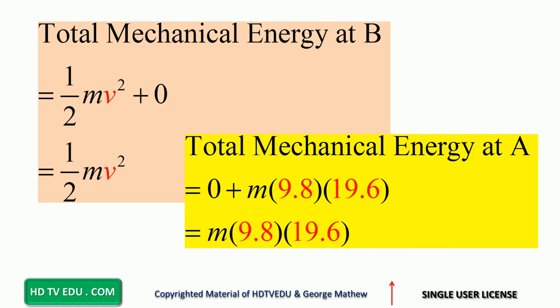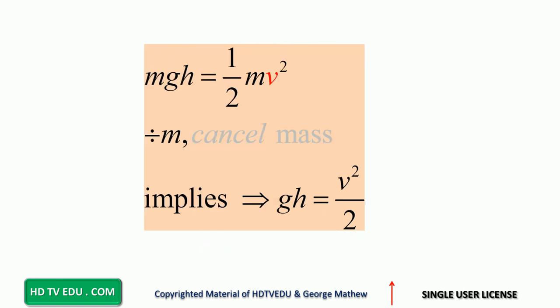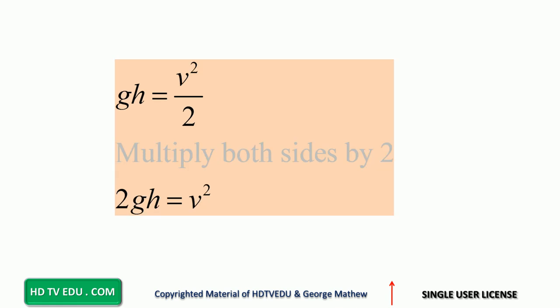The total energy at B is one-half mv squared. Setting the two sides equal: mgh equals one-half mv squared. Cancel mass from both sides, and you get gh equals v squared over two.